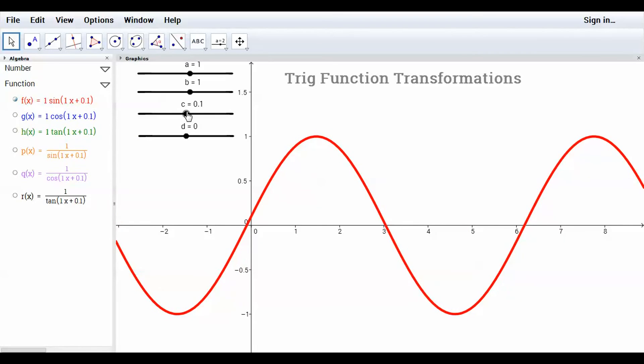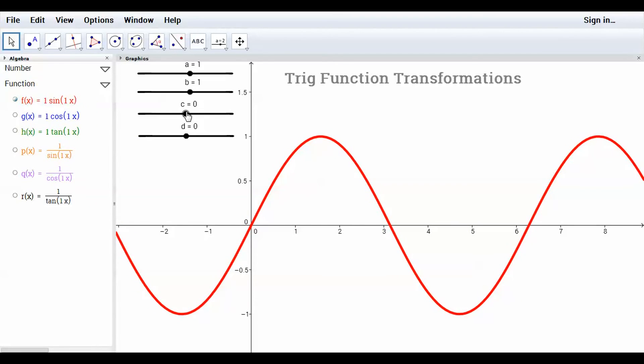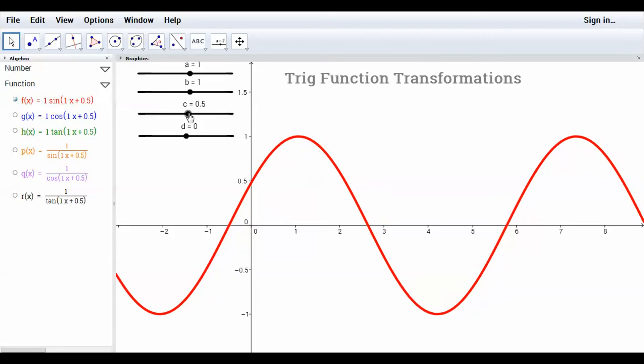The graph moves left. So watch as I move this C value from 0 to 0.5. The graph moved from 0, 0 to negative 0.5. Positive C value moves left. I'll move it more.